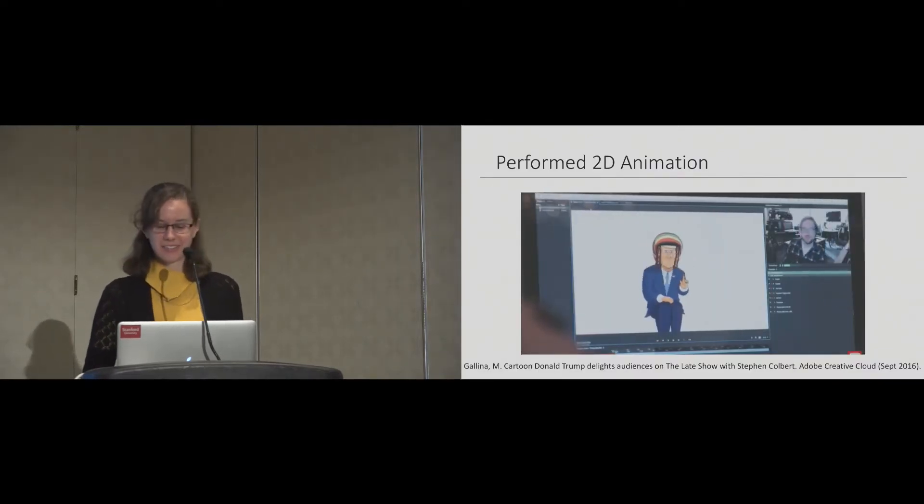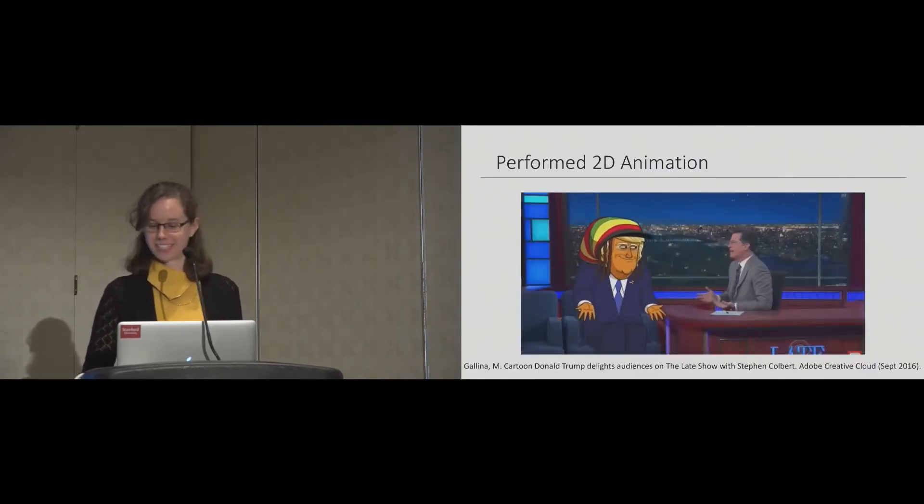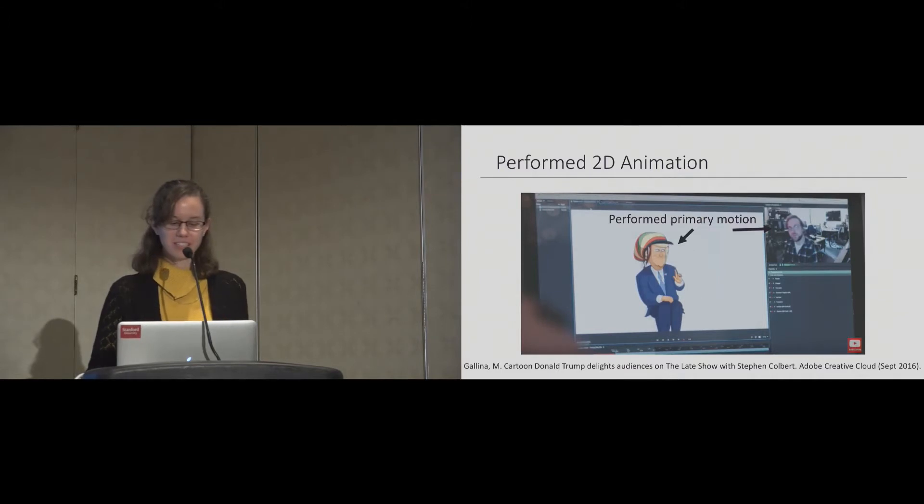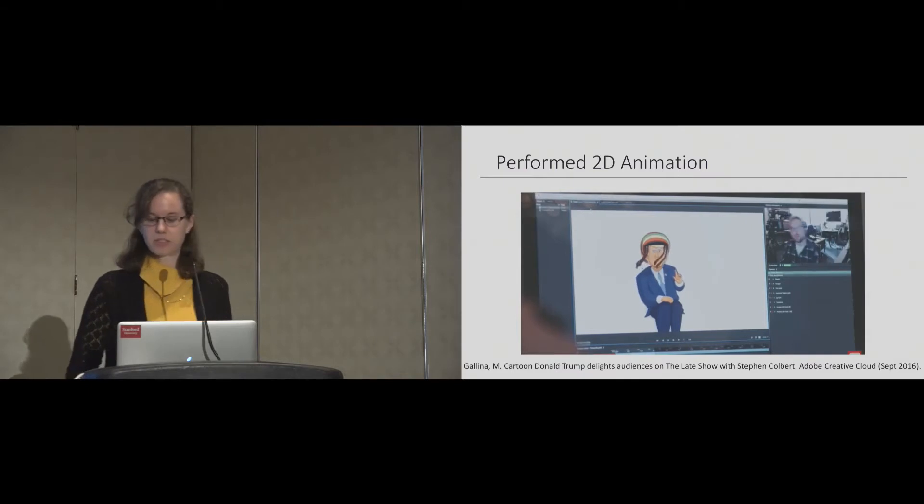In recent years, a new medium of performed 2D characters has emerged. Cartoon characters have started to appear live on streaming platforms and broadcast TV. The primary motion of the character is controlled by the performer with face tracking or mouse and touch input. The primary animation is the motion of the main body of the character or the parts of the character that are most important to the story.